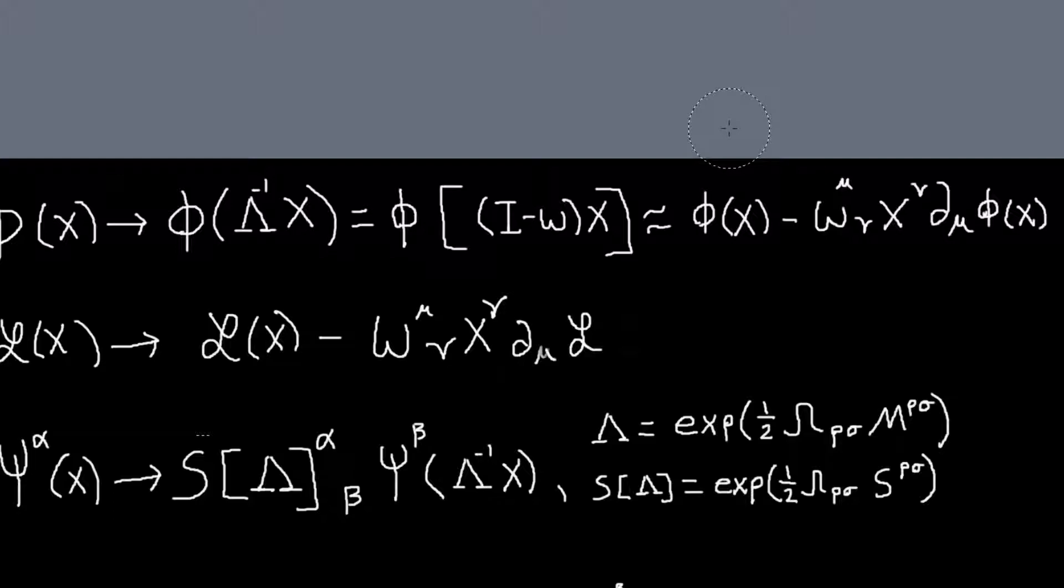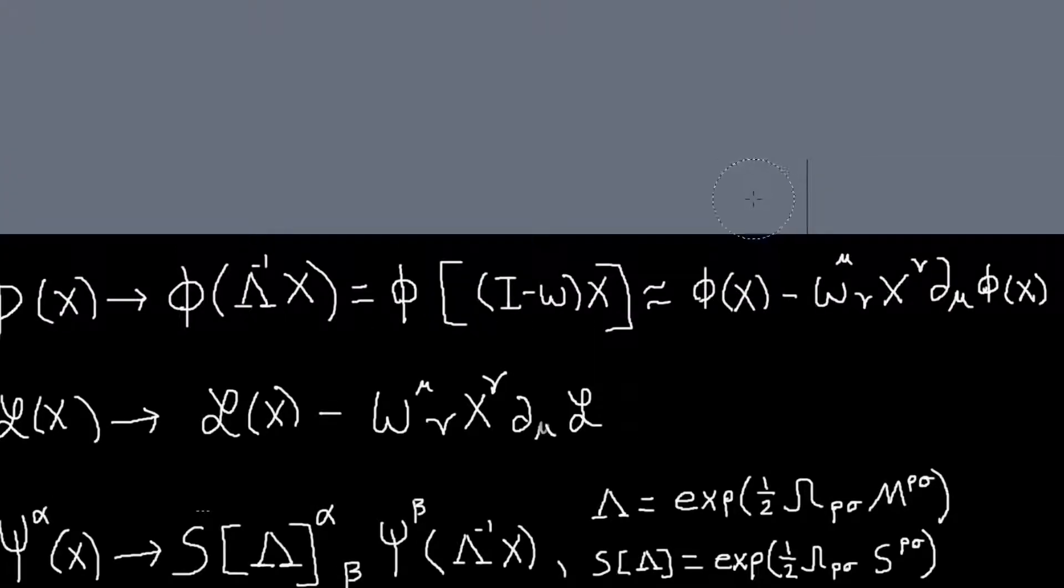So we saw before, we worked out before for the Klein-Gordon theory, how it transforms, how the real scalar fields transform under infinitesimal Lorentz transformations. And we needed that to compute the conserved quantities, the dL dμ of the field times delta of the field.